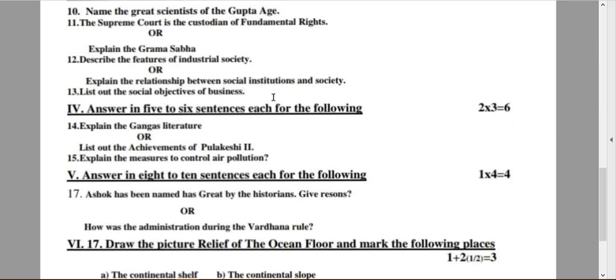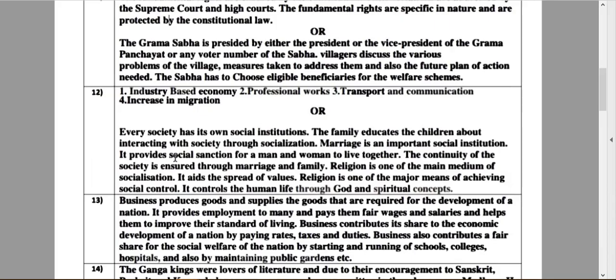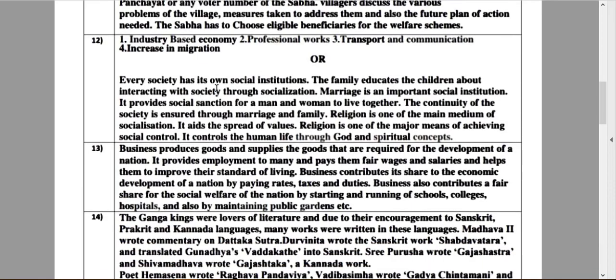Let's move on to choice number 2: Explain the relationship between social institutions and society. So, answer for this: every society has its own social institutions. The family educates the children about interacting with society through socialization. Marriage is an important social institution. It provides social sanction for a man and woman to live together. The continuity of the society is ensured through marriage and family. Religion is one of the main medium of socialization. It aids the spread of values. Religion is one of the major means of achieving social control. It controls the human life through God and spiritual concepts.